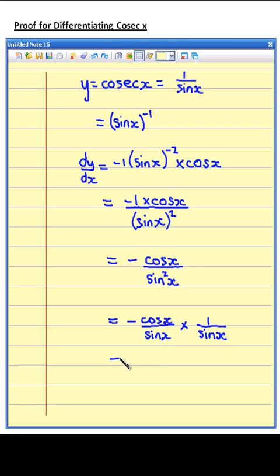The first of these will be cot x, so it's minus cot x, and then cosec x for the second one. The normal way, and the formula booklet way of writing these down, is to put the second one first, so minus cosec x.